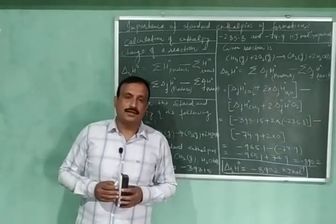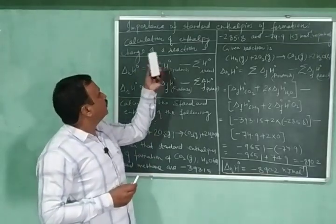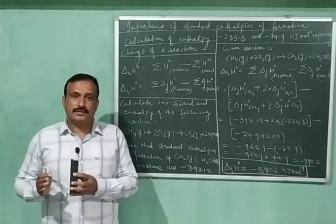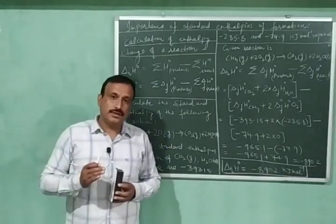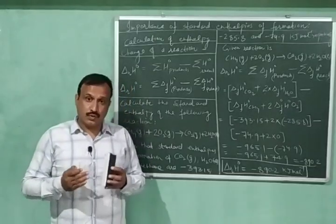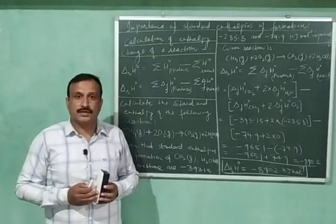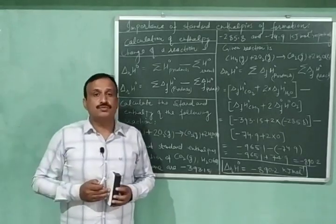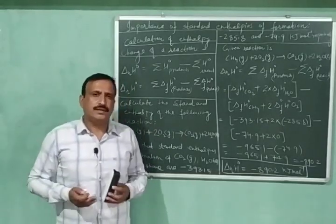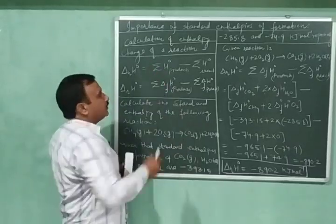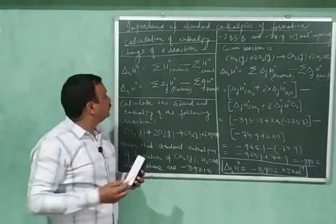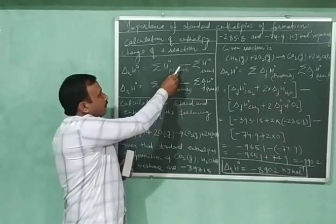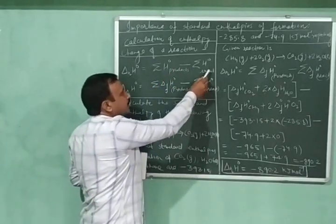Welcome back. Today I am going to discuss the importance of standard enthalpies of formation. In my previous video I told you that the standard molar enthalpy of a compound is equal to its standard enthalpy of formation. By knowing the standard enthalpies of formation of different reactants and products, and by following the convention that the standard molar enthalpy of every element in its most stable state is taken as 0, we can easily calculate the enthalpy change of a chemical reaction. The standard enthalpy change of a reaction equals the sum of the standard molar enthalpies of products minus the sum of standard molar enthalpies of reactants.